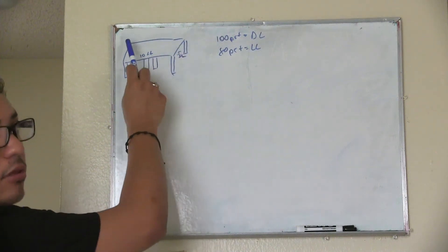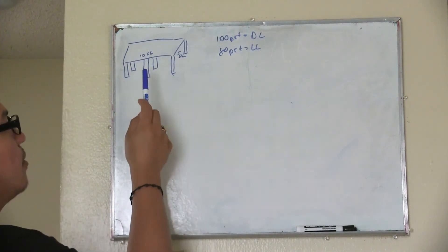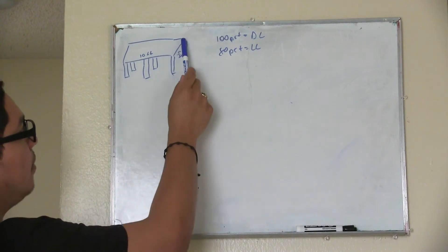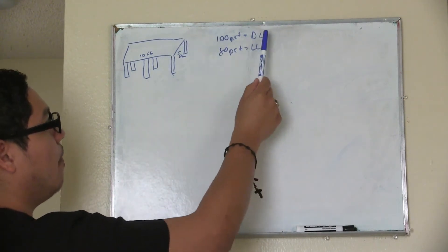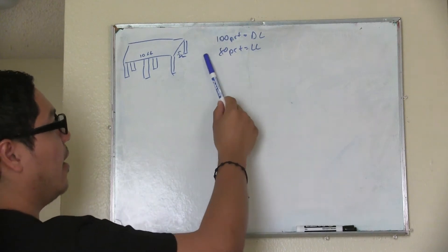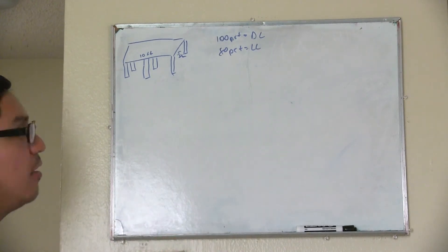So let's say we have this little kind of house with six columns. We have the distance of 10 feet and the distance of 5 feet. Then we have a dead load of 100 pounds per square feet and a live load of 80 pounds per square feet.